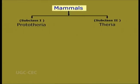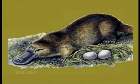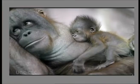Mammals are classified into two main subclasses: Prototheria and Theria, classified on the basis of their egg formation. Prototheria are egg-laying mammals, whereas animals of Theria are the ones which give birth to living young ones directly.